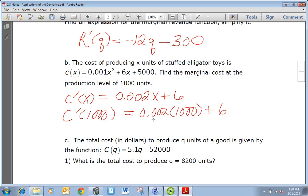And we get 0.002 times 1000 plus 6. Well, 1000 times 0.002 is just 2, and 2 plus 6 is 8. So that'll be the marginal cost at 1000 units.